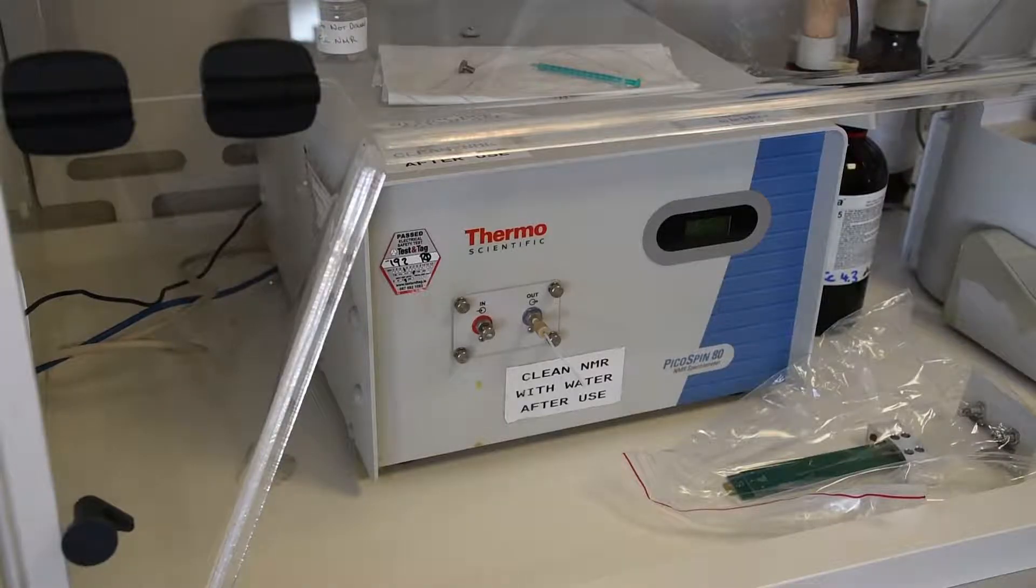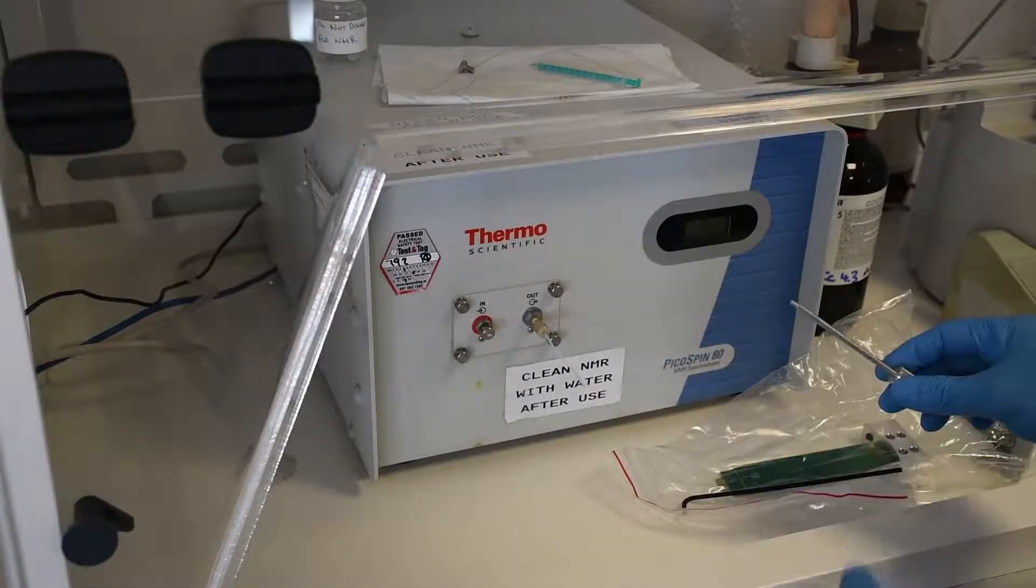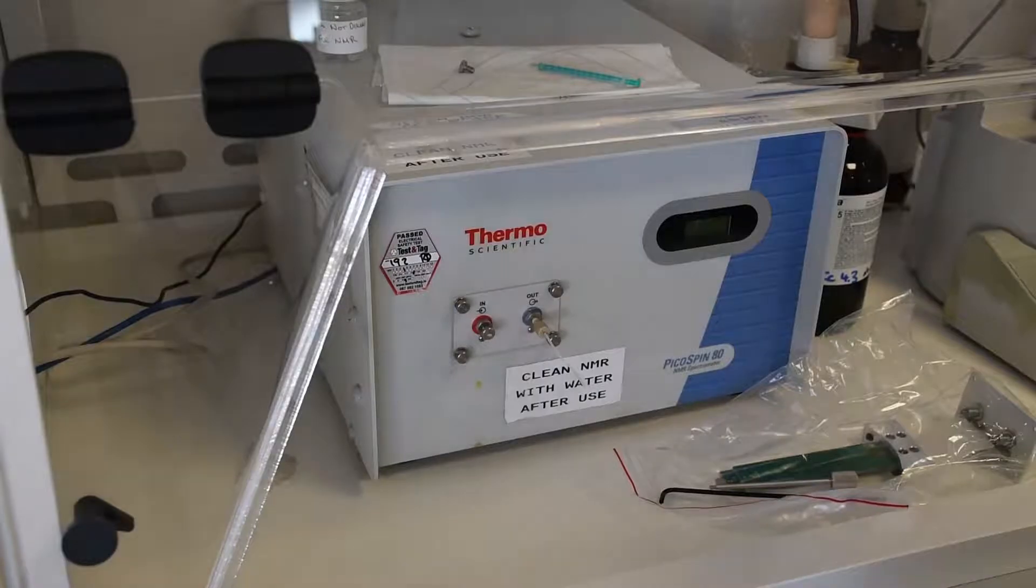It comes with a long allen key and a custom tool which is basically a screw that fits into a slot and allows you to pull the old cartridge back out. So here are those two tools, the custom tool and the long allen key.